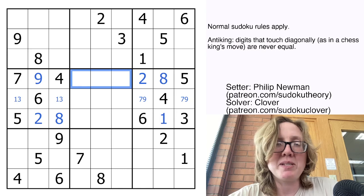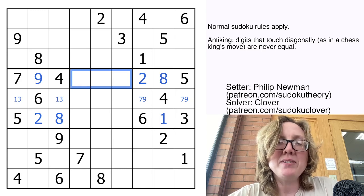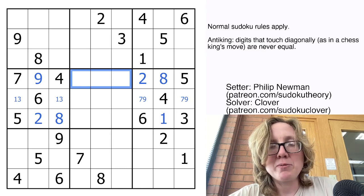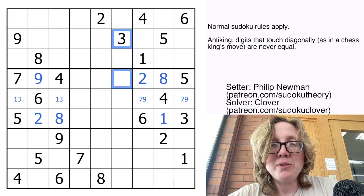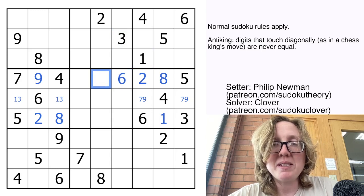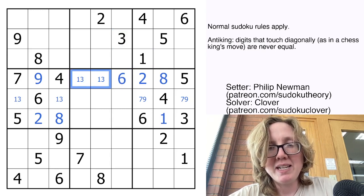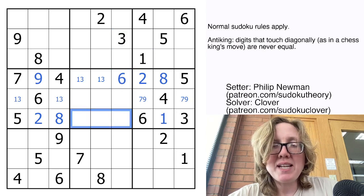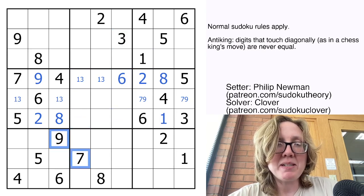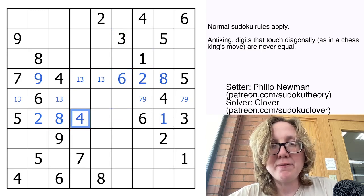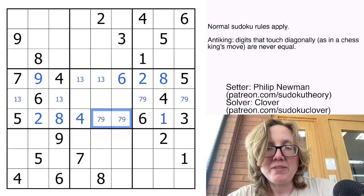Let's jot down what we still need to place in this row. We still need a 1, a 3, and a 6 in this row, and I can see that this cell cannot contain a 3 by Sudoku, and it can't contain a 1 by the anti-king rule. So this must be a 6, and then this is a 1-3 pair. I need a 4, a 7, and 9 to finish this row. This cell cannot be a 7 or 9 because of Sudoku and anti-king, so that's a 4, and then this is a 7-9 pair.